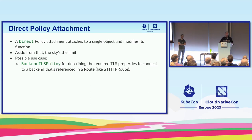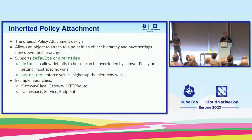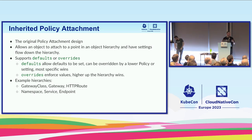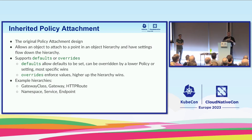The more complicated version is inherited policy attachment — this is the original policy attachment design. It allows an object to attach to a point in a hierarchy and have settings flow down. There are two types: defaults and overrides. Defaults let you set a setting at a gateway level and have it apply to all HTTP routes attached to that gateway, for example. Overrides let you say this setting applies to all HTTP routes and cannot be changed by the app developer.